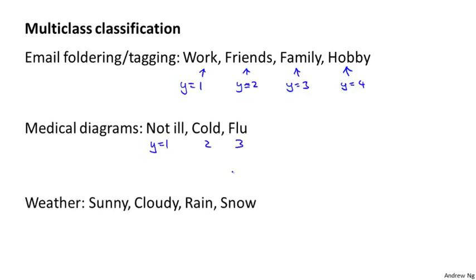And a third and final example, if you are using machine learning to classify the weather, maybe you want to decide that the weather is sunny, cloudy, rainy, or snow. And so in all of these examples, y can take on a small number of discrete values, maybe 1 to 3, 1 to 4, and so on.